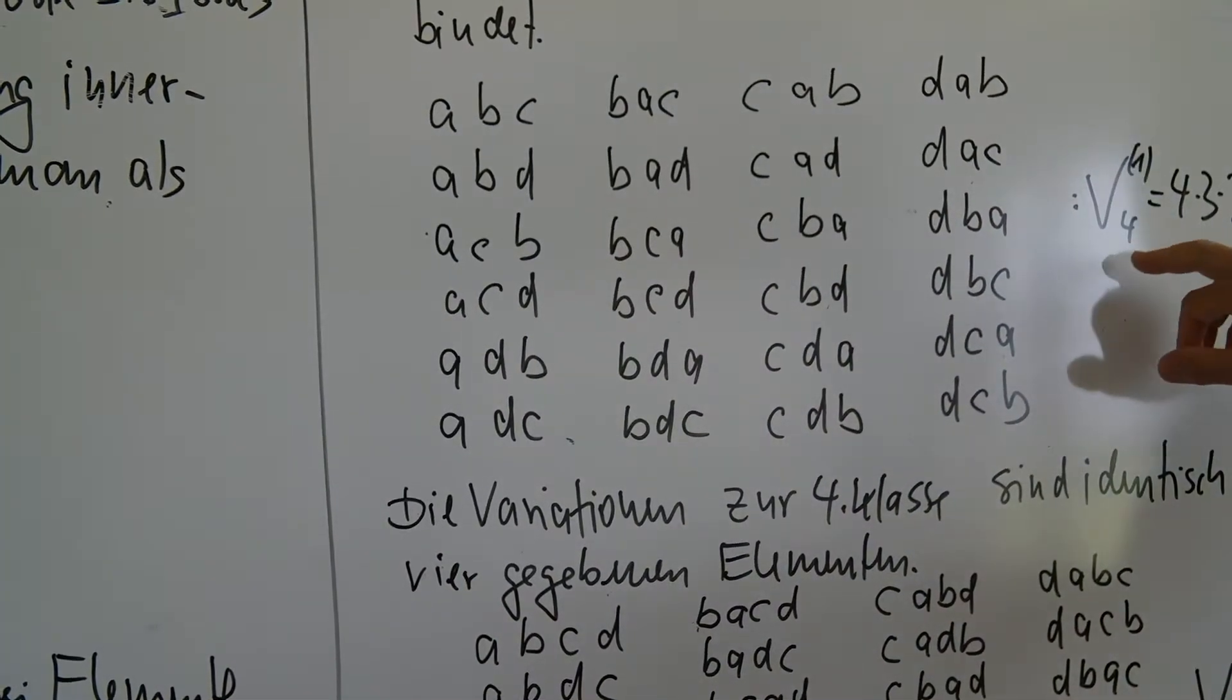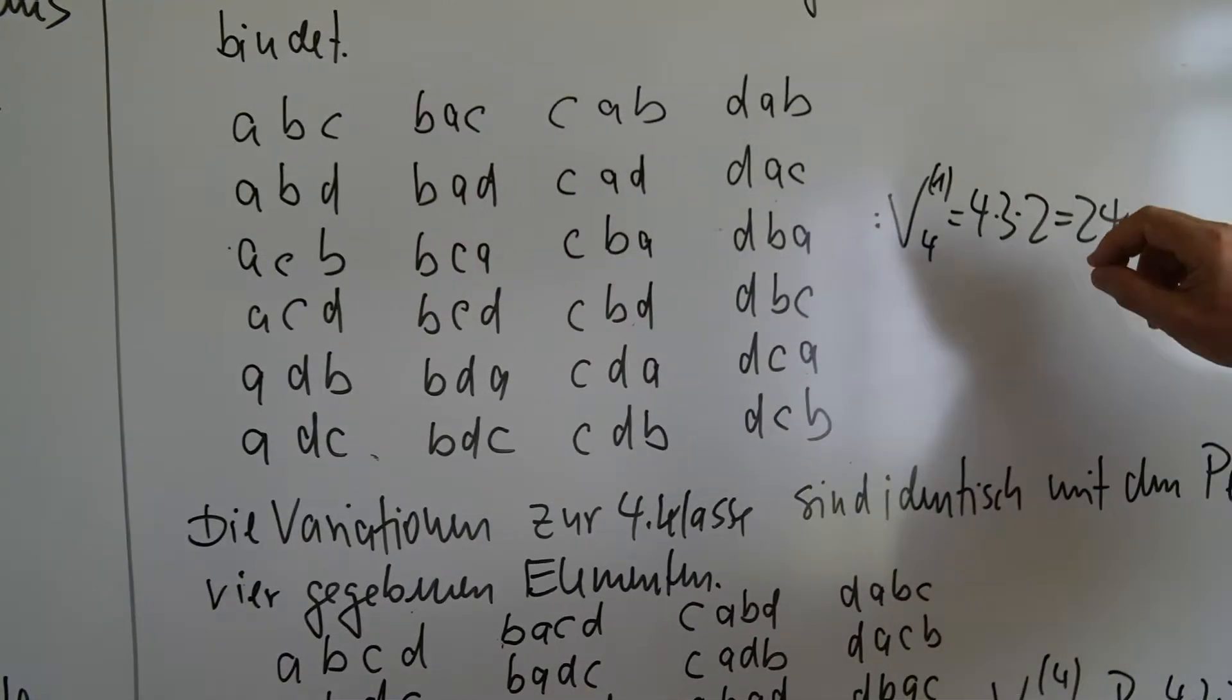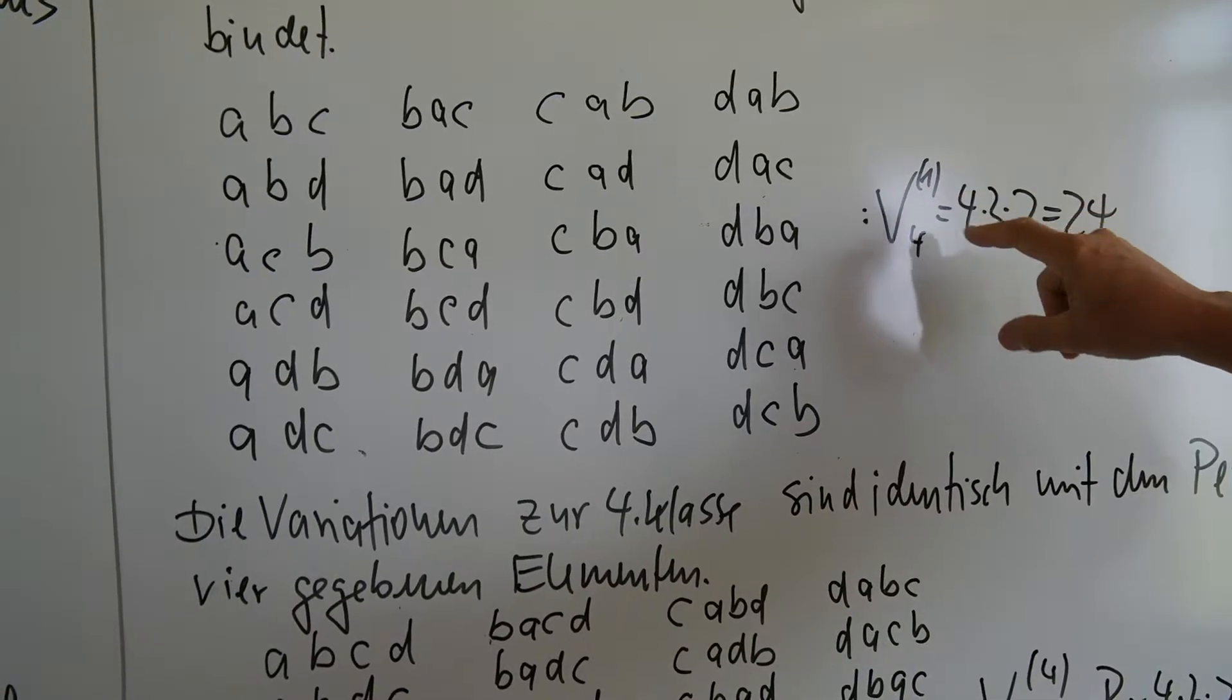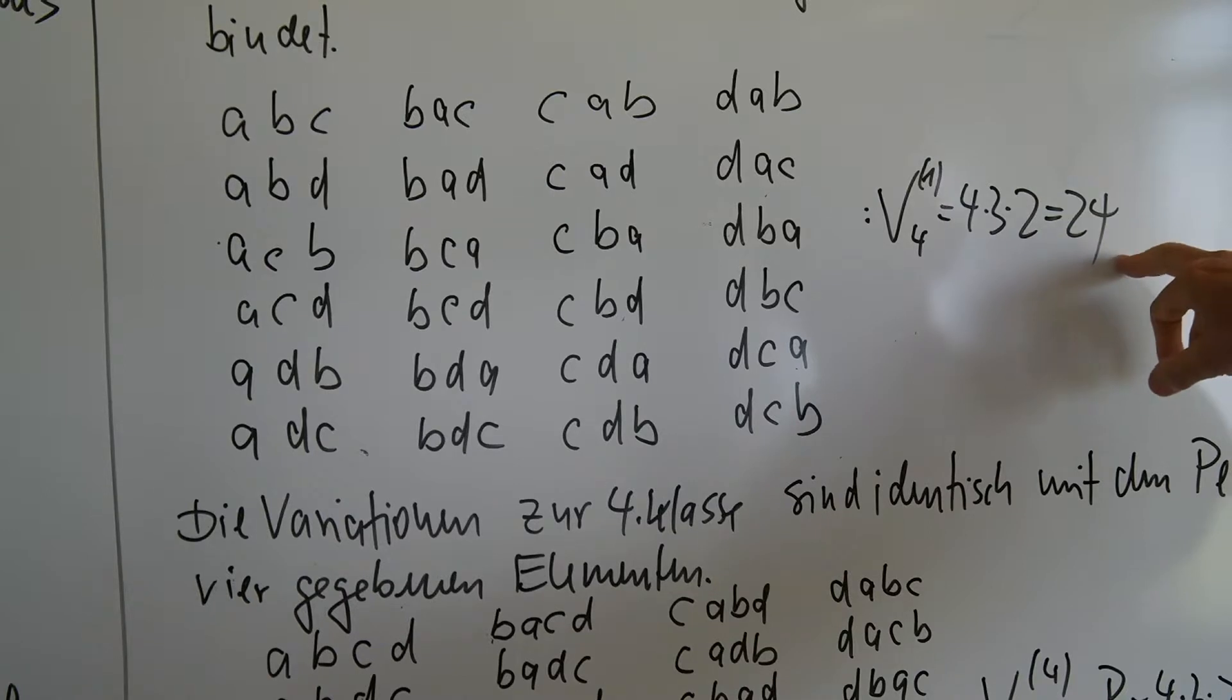Dann ergibt sich die Variation von vier Elementen zur dritten Klasse, das ist 4 mal 3 mal 2 und das ist dann 24.